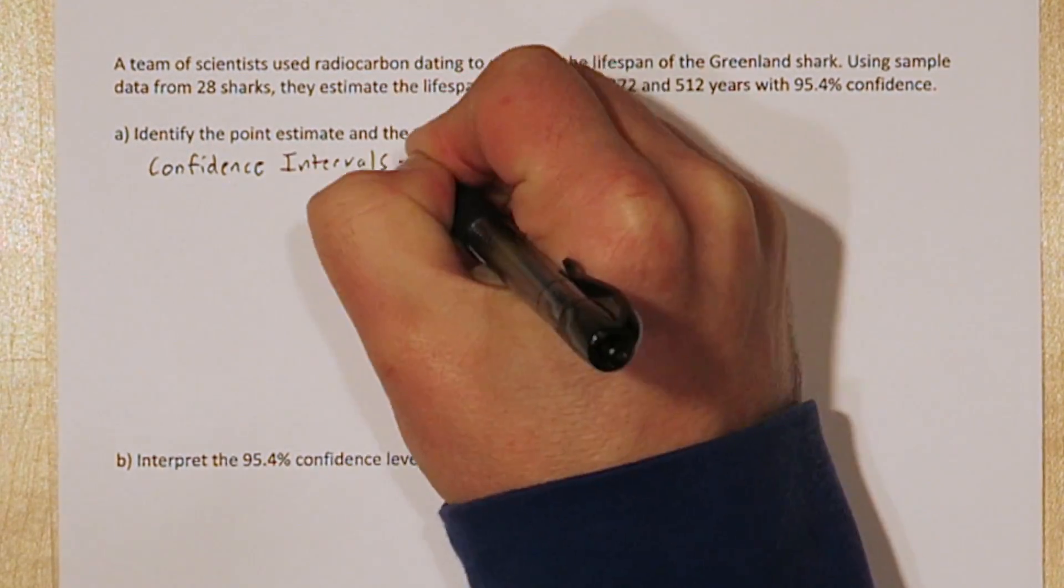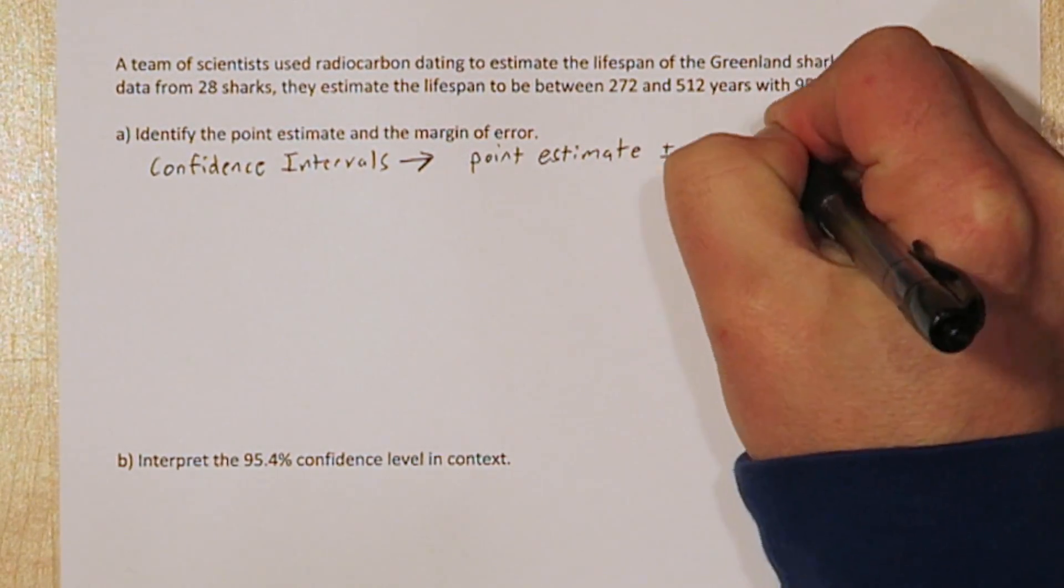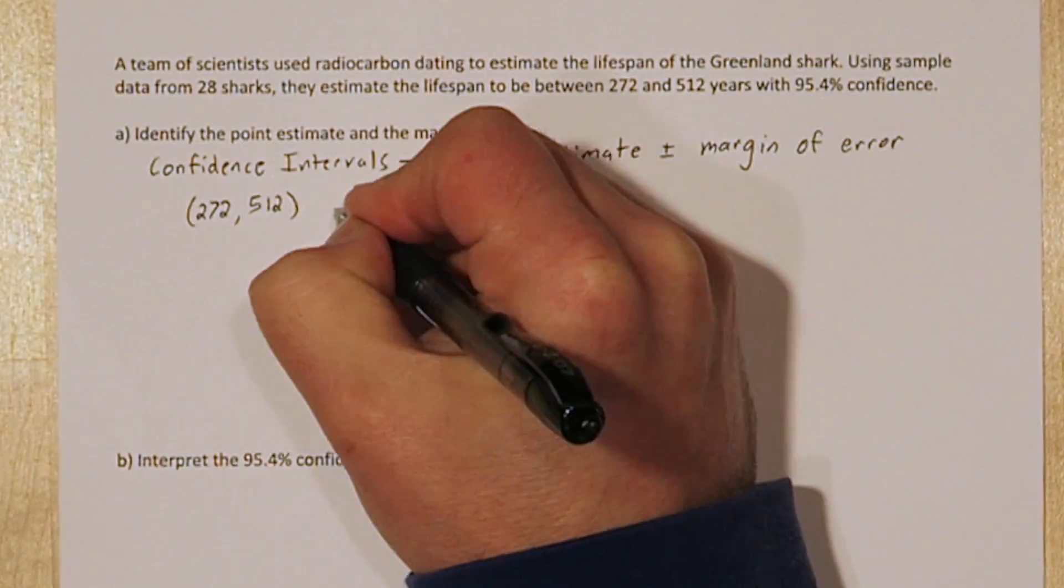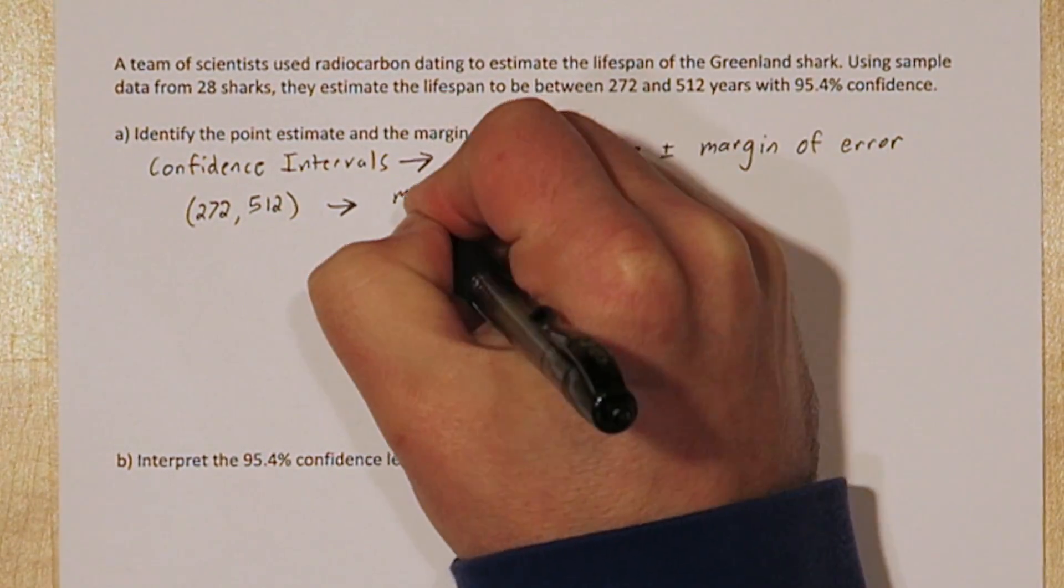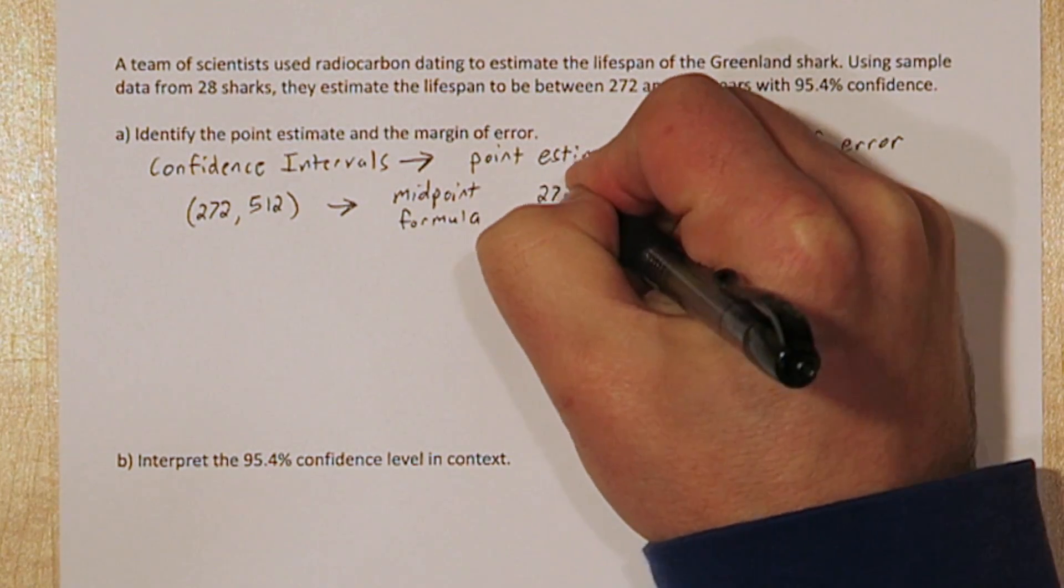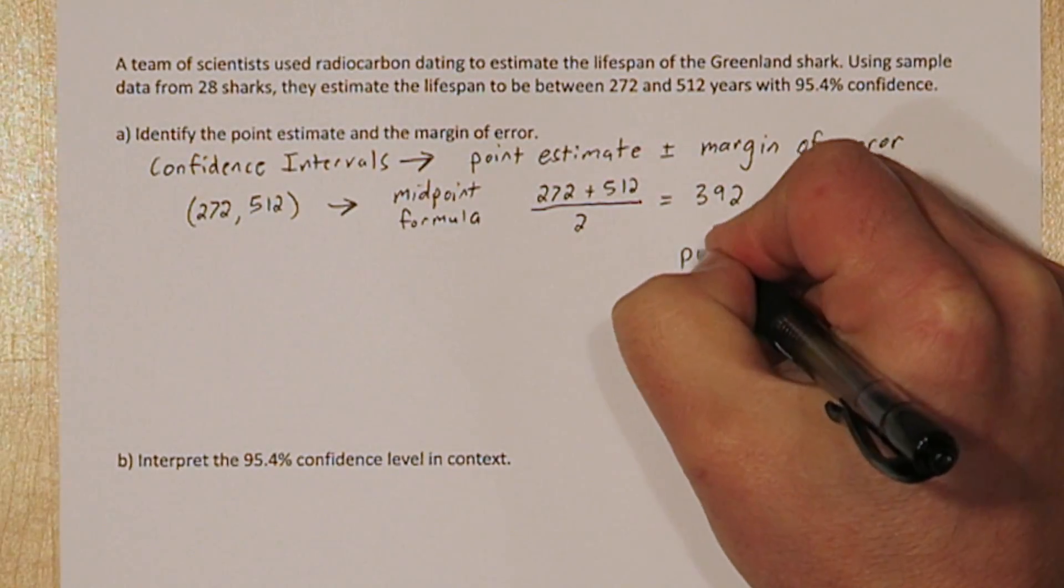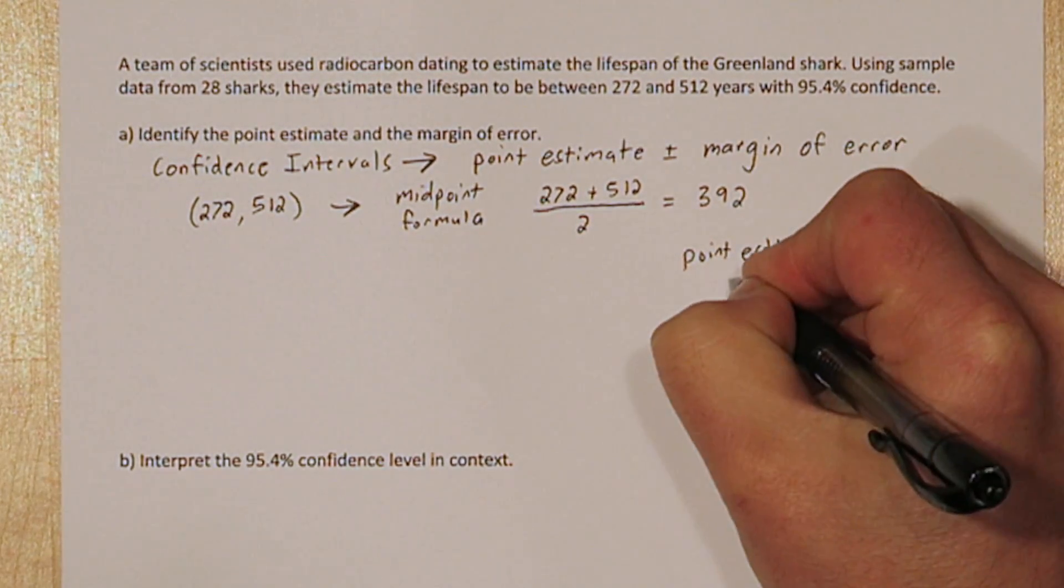All confidence intervals have this structure: point estimate plus or minus margin of error. Our confidence interval is 272 to 512. We can use the midpoint formula to find the middle of the interval is 392. That's our point estimate, 392 years.